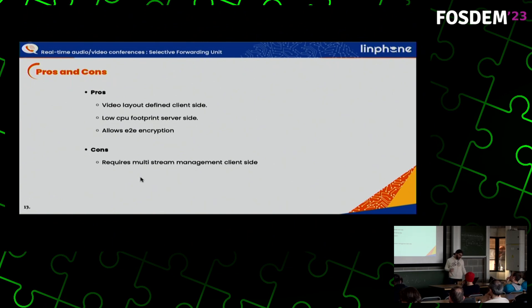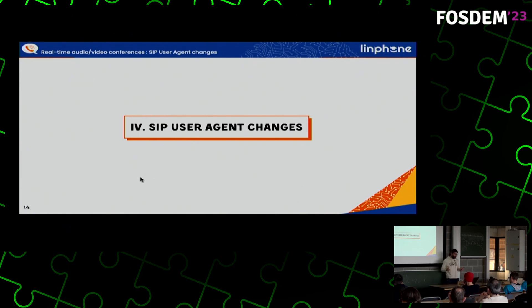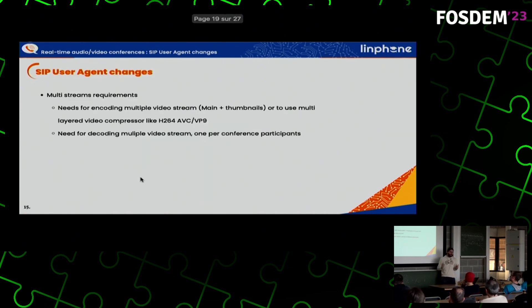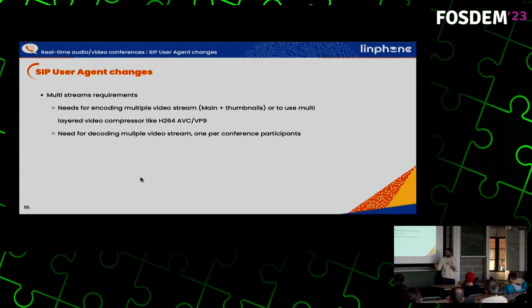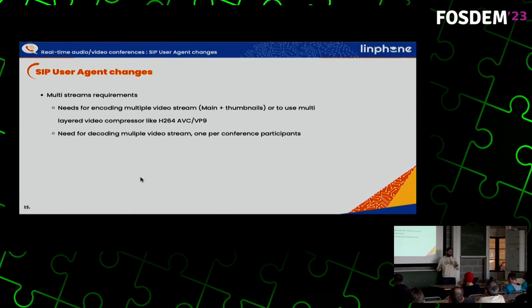The drawback of this approach is that it requires the SIP client to be able to manage multi-stream, which was not the case for standard one-to-one calls. For the SIP user agent, what we had to change is mainly multi-stream requirements. In the past, the SIP client was able to send one audio stream plus one video stream. Now it requires the client to send one — but most of the time two — video streams: one for high-resolution video and another for a thumbnail, as well as being able to receive one video stream per participant of the video conference.